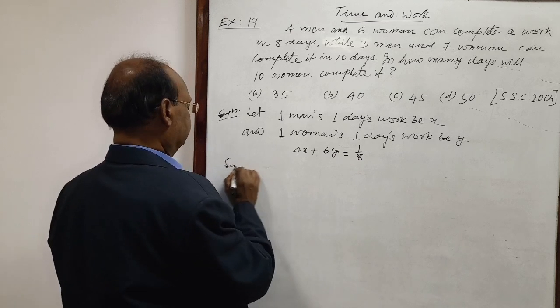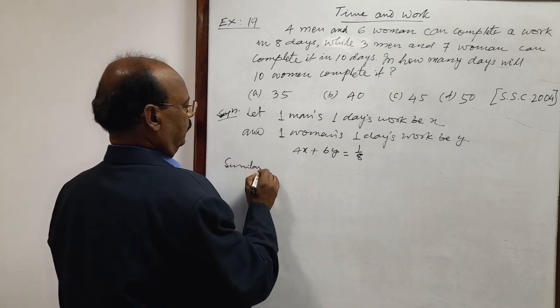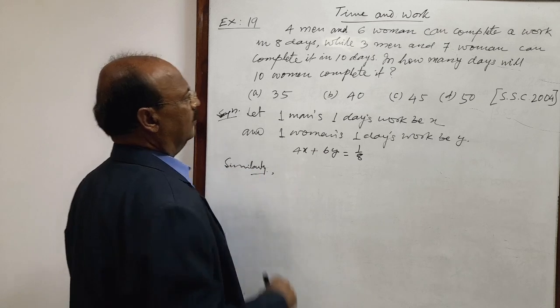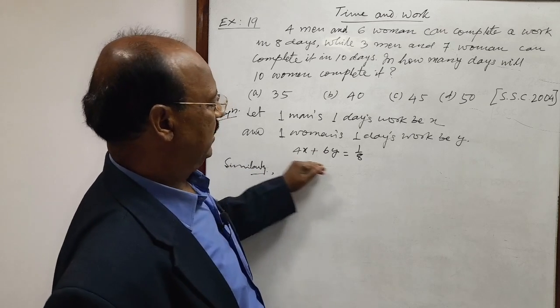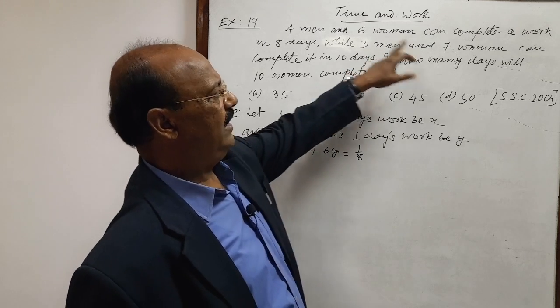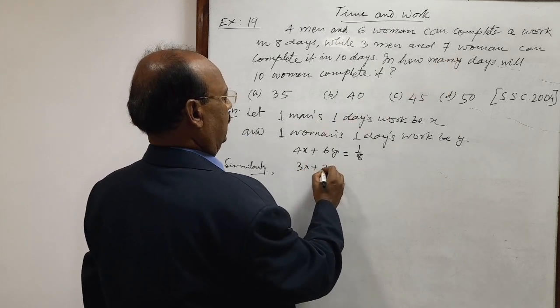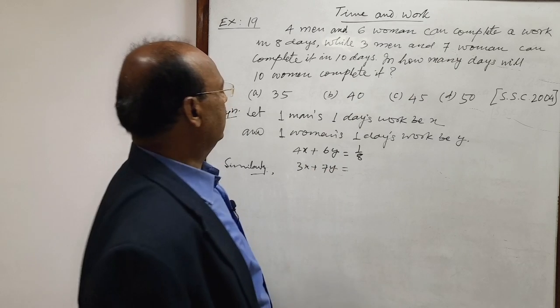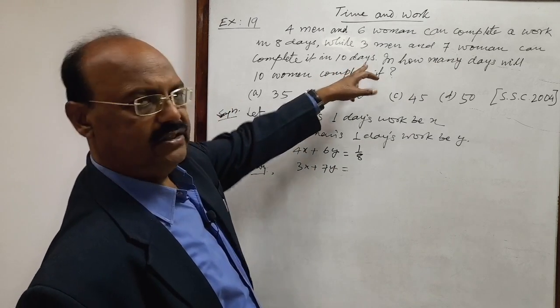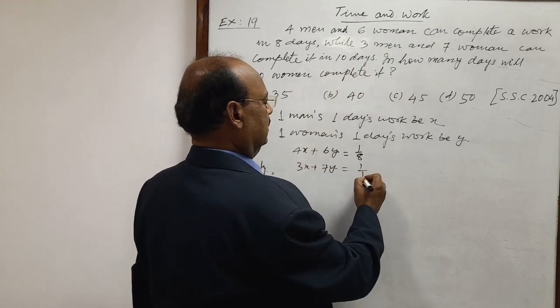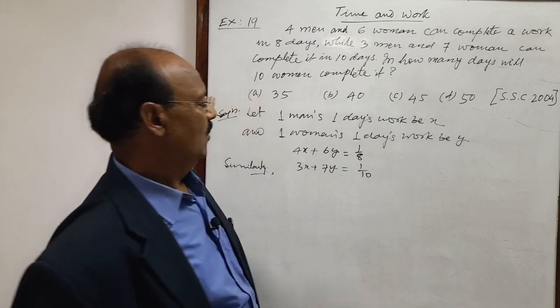Similarly, with the help of second case, we can make another equation. Three men and seven women, so 3x plus 7y can complete this work in ten days. So you write here one by ten.